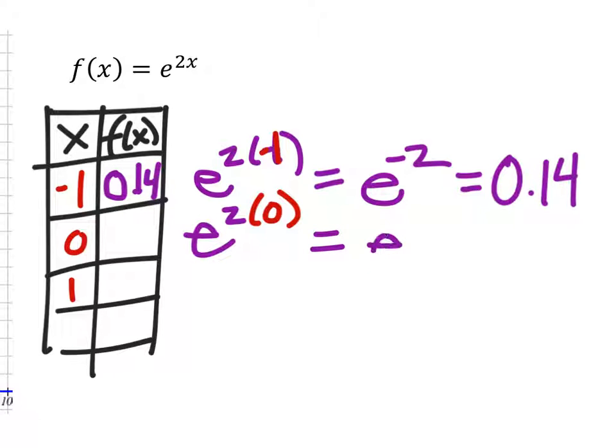So that gives us e to the power of 2 times 0 is 0. And anything to the power of 0, even irrational numbers, are 1, which I can put into the table now as that ordered pair.